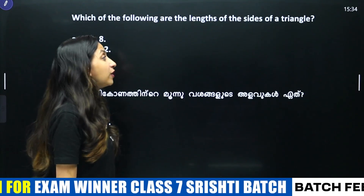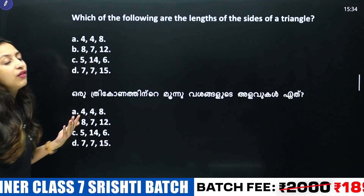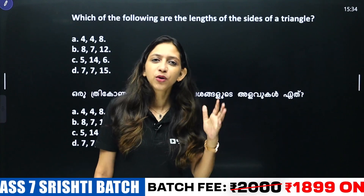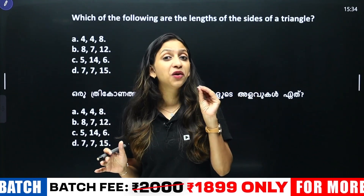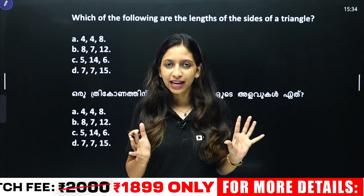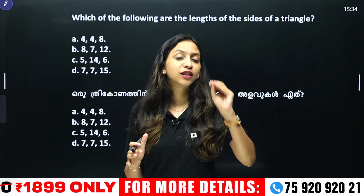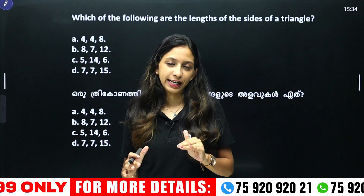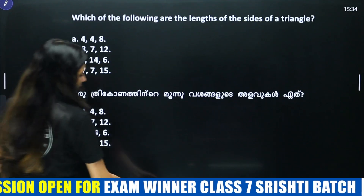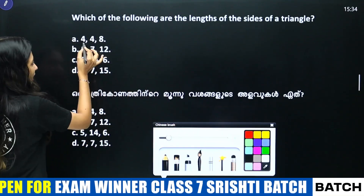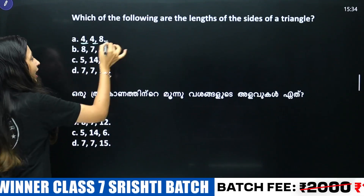Which of the following are the length of the sides of a triangle? There are three sides of the triangle. Our condition is: the sum of two sides of the triangle must be greater than the third side. We will add the lengths of the two smaller sides and compare with the third side. For example, 4, 4, 8: two sides added give 8, which equals the third side, so this does not form a valid triangle.